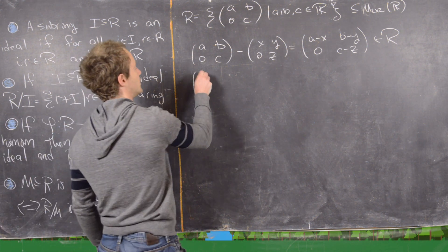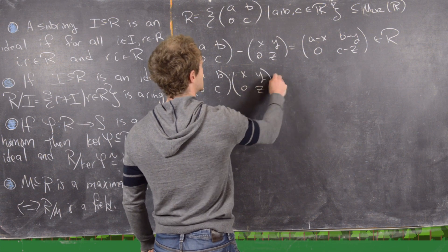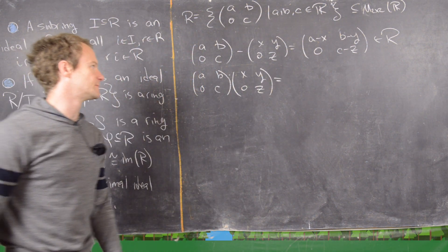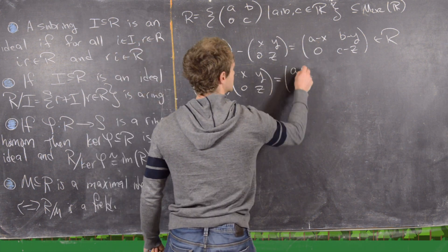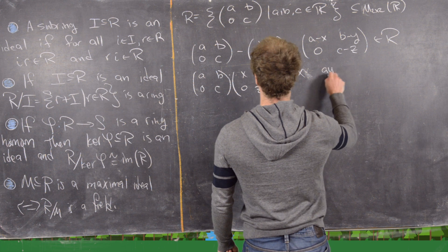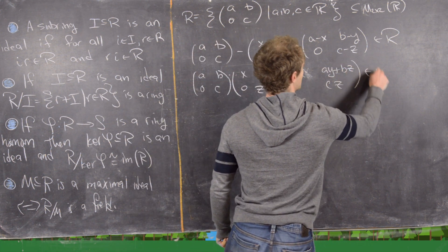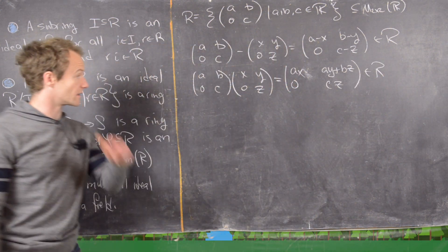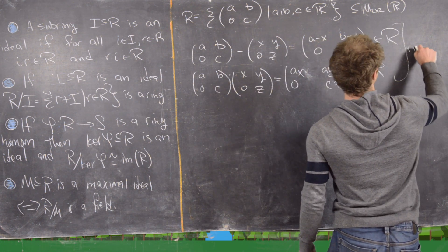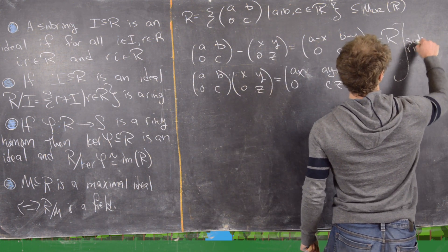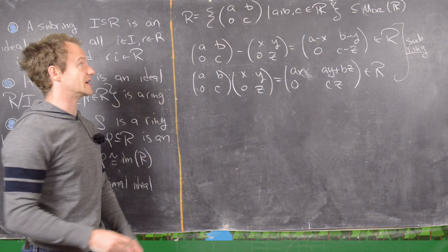For multiplication, [a,b;0,c] times [x,y;0,z] gives us ax in the upper left, ay+bz in the upper right, 0 in the lower left, and cz in the lower right — which is clearly still upper triangular. So this is indeed a subring, and being a subring means it is a ring in its own right.